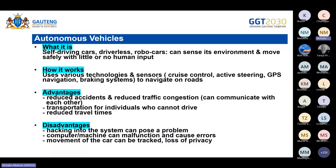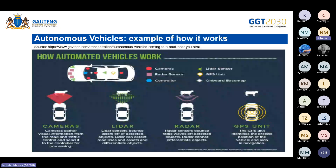It would be easy to detect where you are at a particular time. Autonomous vehicles use cameras, radar sensors, a controller, a LiDAR sensor, a GPS unit, and an onboard base map — each of these helps sense the surrounding environment and navigate the road safely.